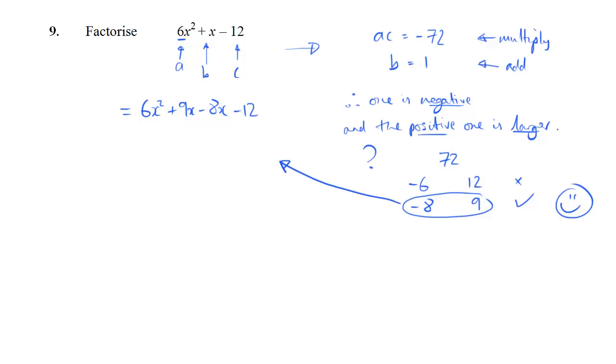So, the next step is to factorize adjacent pairs. So, 6x squared plus 9x, what goes into both of those? Well, 3x. So I take that out of the brackets, and I'm left with 2x plus 3. For the next bit, I know that the bracket should be the same, so I'll write that down first to make my life easier. And I think what would have to go in front of this, so that it would multiply out to give minus 8x minus 12, and the answer is minus 4.